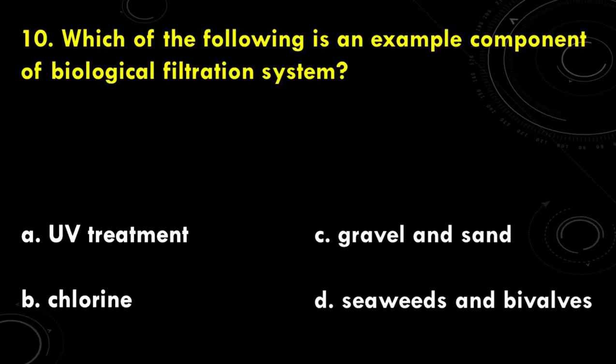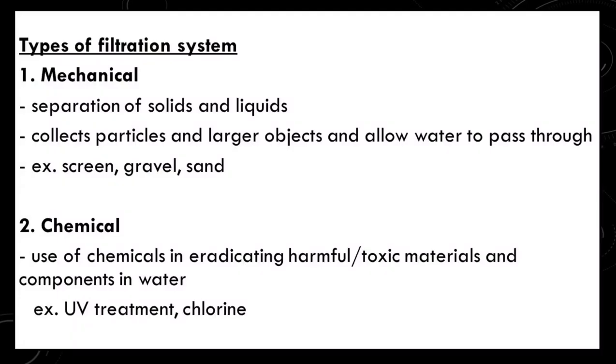The next question: which of the following is an example component of a biological filtration system? Is it A. UV treatment, B. chlorine, C. gravel and sand, or D. seaweeds and bivalves? To answer this, we briefly discuss the different filtration systems. Mechanical filtration separates solids and liquids — it collects particles and larger objects and allows water to pass through. Screen, gravel, and sand are good examples. In chemical filtration, chemicals are used to eradicate harmful or toxic materials in water, including UV treatment and application of chlorine.